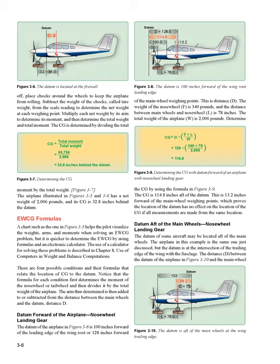EWCG Formulas: A chart such as the one in figure 3-5 helps the pilot visualize the weights, arms, and moments when solving an EWCG problem, but it is quicker to determine the EWCG by using formulas and an electronic calculator. The use of a calculator for solving these problems is described in Chapter 8, Use of Computers in Weight and Balance Computations. There are four possible conditions and their formulas that relate the location of CG to the datum. Notice that the formula for each condition first determines the moment of the nose wheel or tail wheel and then divides it by the total weight of the airplane. The arm thus determined is then added to or subtracted from the distance between the main wheels and the datum.